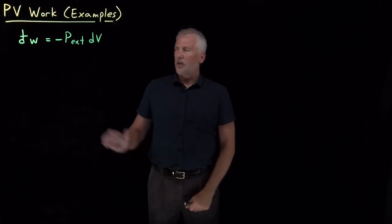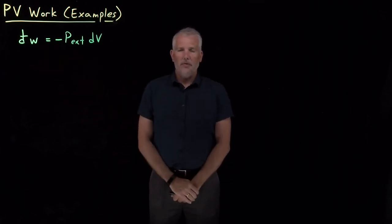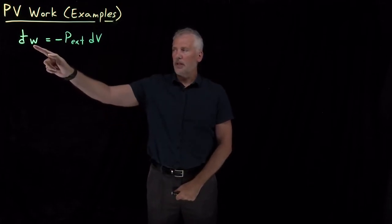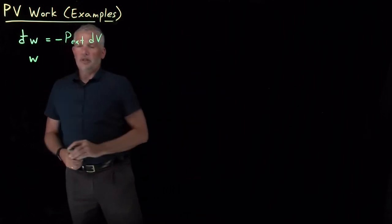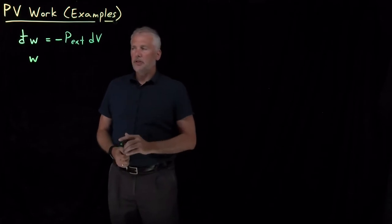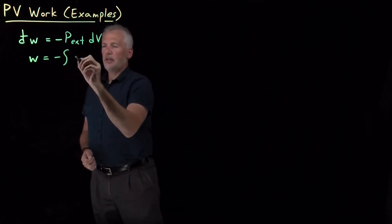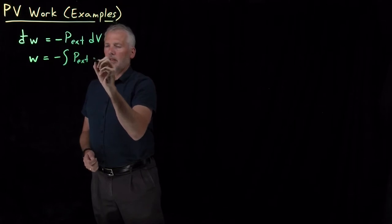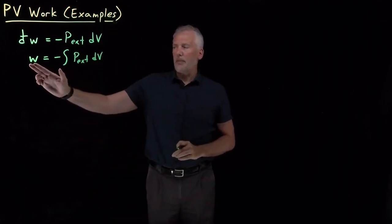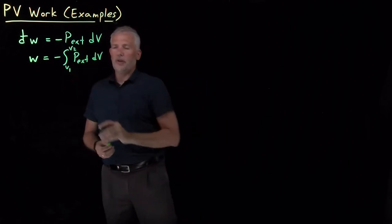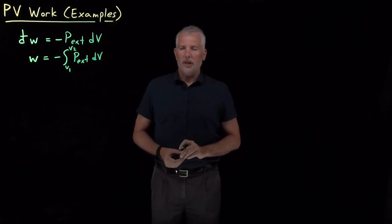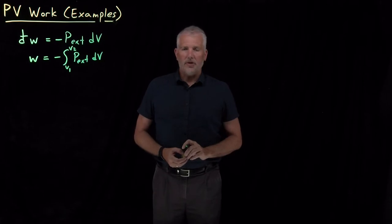We have an expression for how to calculate the PV work for a gas undergoing some change in its volume. This expression is dW = -p_external dV. If we want to know more than just the infinitesimally small change in the work, we integrate this process. Here's a more general expression for the finite amount of work for a gas changing its volume from some initial volume to some final volume - we integrate p_external times dV over that change in volume.